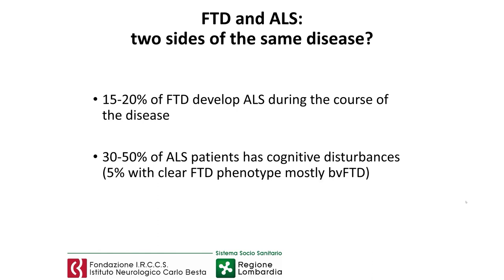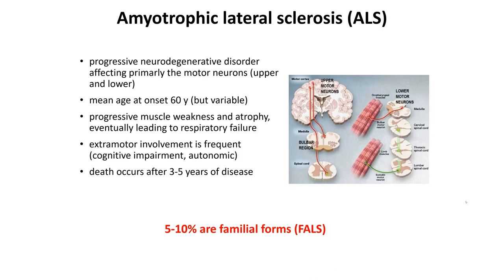As I said, 15 to 20% of FTD patients can develop amyotrophic lateral sclerosis during the course of the disease. But we also know that from 30 to 50% of ALS patients can develop cognitive disturbances. In particular, a clear pattern of frontotemporal dementia — mostly behavioral frontotemporal dementia — occurs in about 25% of cases. So we can suppose that the two diseases are part of a clinical continuum or are two sides of the same disease.